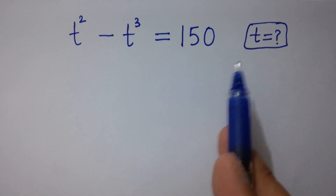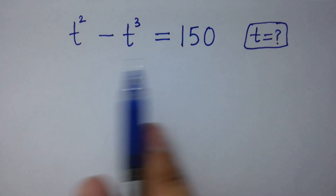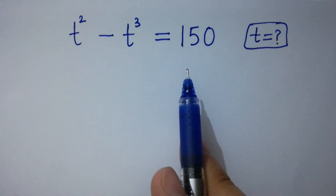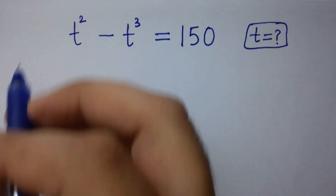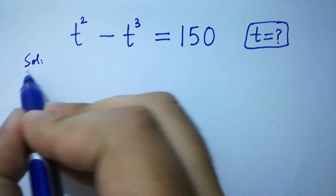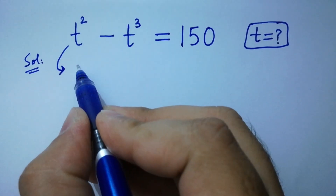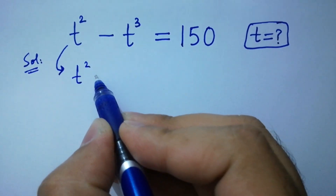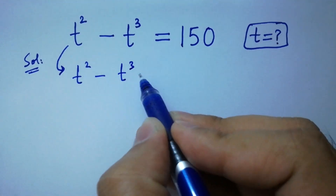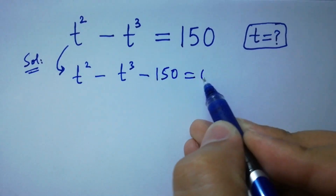Hello friends. Find the value of t if t squared minus t cubed equals 150. Let's have a solution. It can be written as t squared minus t cubed minus 150 equals 0.